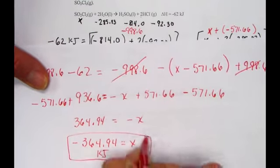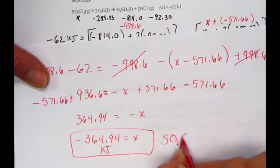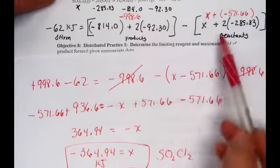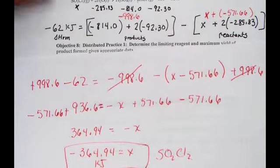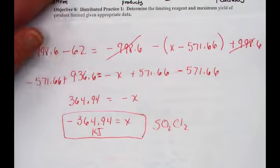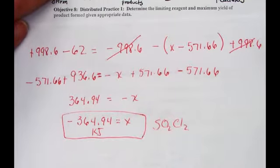And there's the kilojoules, the value given to SO2Cl2. Now I did the algebra step by step. You wouldn't need to show all that if you could do that on your calculator. Negative 364.94, the value of our target variable, the reactant SO2Cl2.